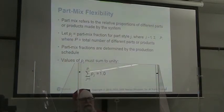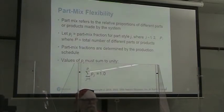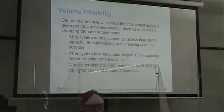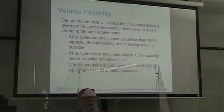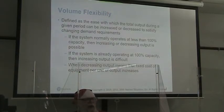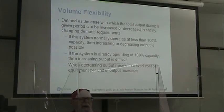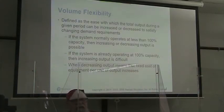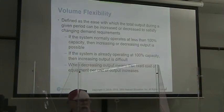All of our values of P sub J must sum to unity — we can't have greater than 100%. Volume flexibility is the ease with which our total output for a given period can be increased or decreased to satisfy changing demand requirements. If the system normally operates at less than 100% capacity, then increasing or decreasing the output is possible. If it's already operating at 100% capacity, then increasing our output is difficult.